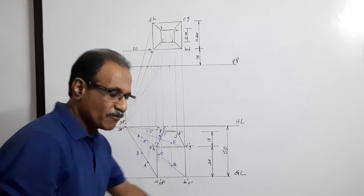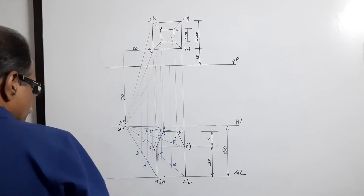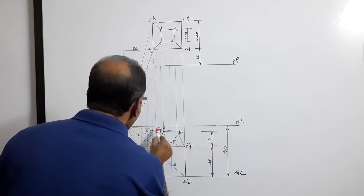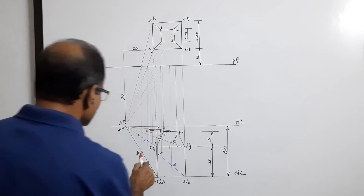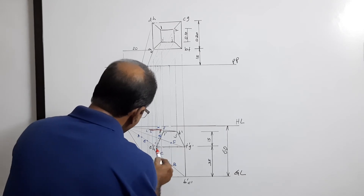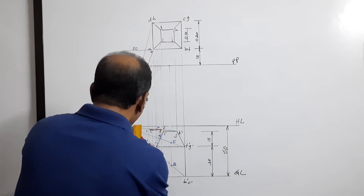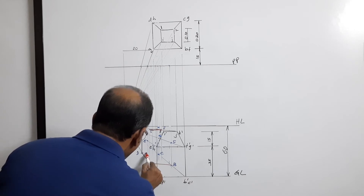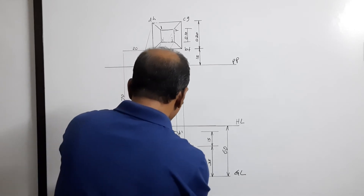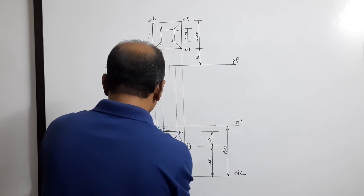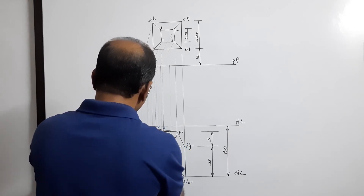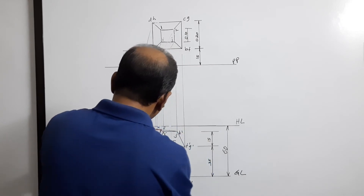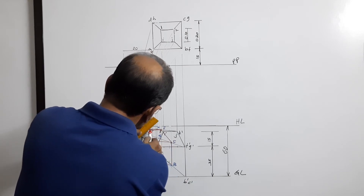We have marked all the points; now we have to connect them. Connect I, J, K, L to form the top square of the frustum. Then connect the corresponding edges of the prism and frustum to complete the perspective drawing.